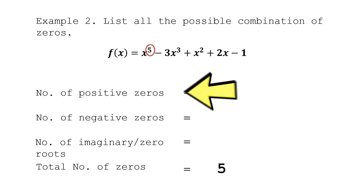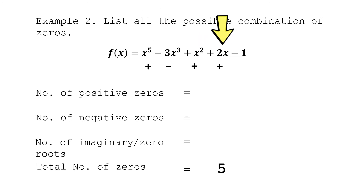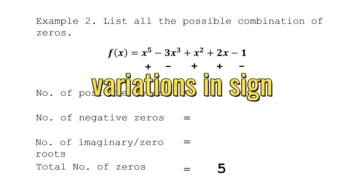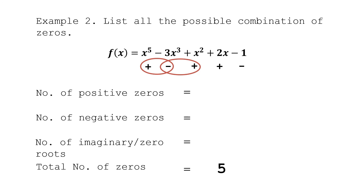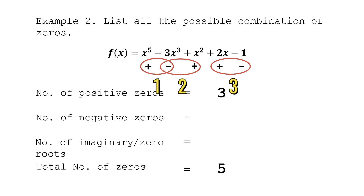To find the number of positive zeros from f(x), let's write the sign of each term: positive, negative, positive, positive, negative. Counting the variations in sign: positive to negative is one variation, negative to positive is another, positive to positive is no variation, and positive to negative is another variation. So the number of positive zeros is 1, 2, 3 — equal to 3.